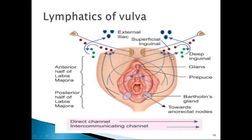From the clitoris, lymphatics drain directly into deep inguinal nodes. Bartholin glands drain directly into anorectal nodes. From superficial inguinal nodes to deep inguinal nodes and then to external iliac nodes. To summarize: anterior half of labia majora and mons pubis have contralateral drainage to superficial inguinal nodes; posterior half of labia majora has ipsilateral drainage; clitoris bypasses superficial inguinal nodes to drain into deep inguinal; Bartholin glands drain into anorectal nodes.